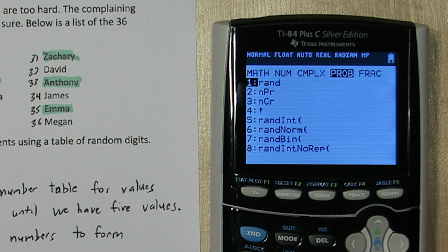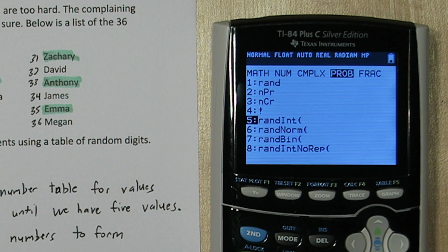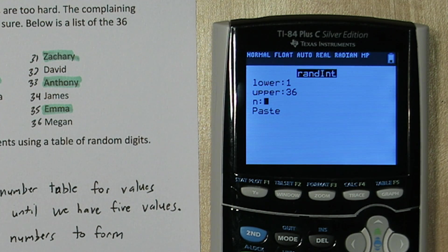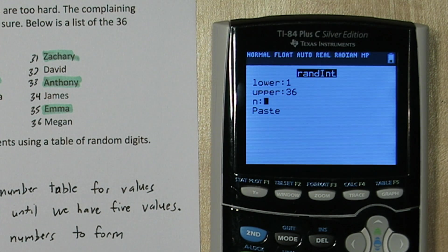Press math and go to PRB. Click random integer. For lower, we're going to do 1 again, upper 36. But for N, we're going to put a number greater than 5. That way if we get any repeats, we can ignore them and move on to the next number. So I'll put like 15.